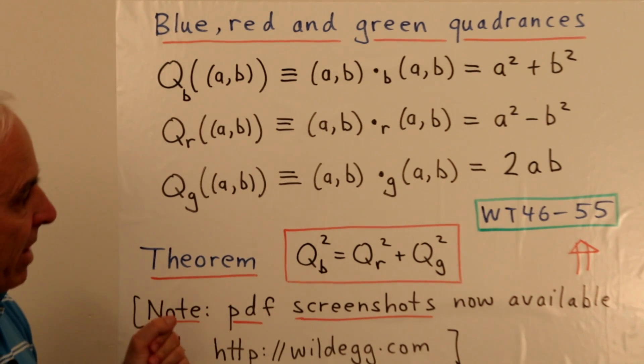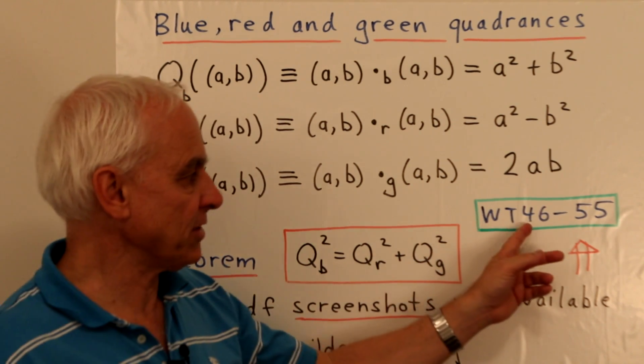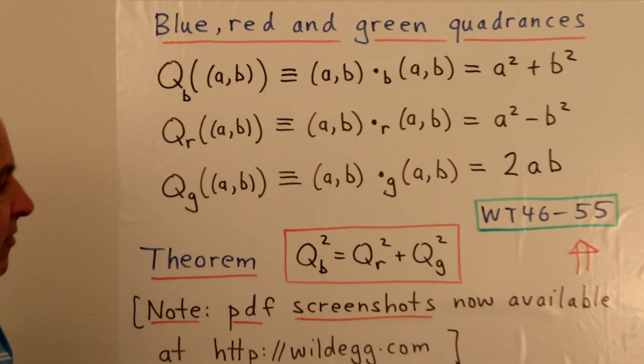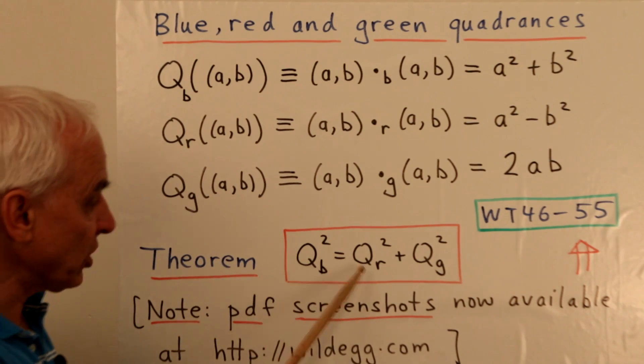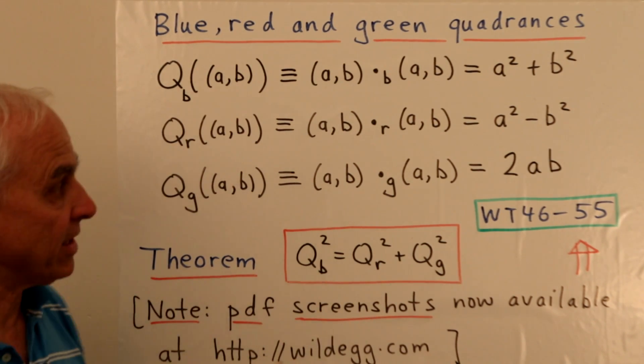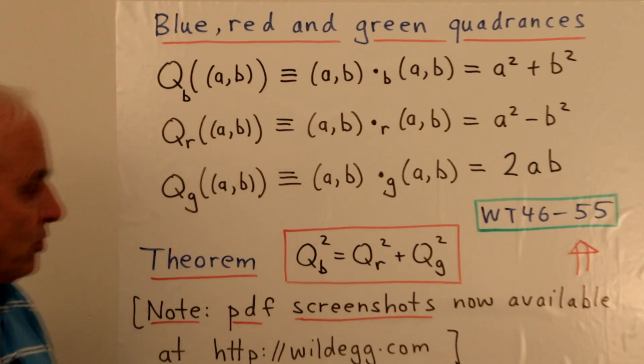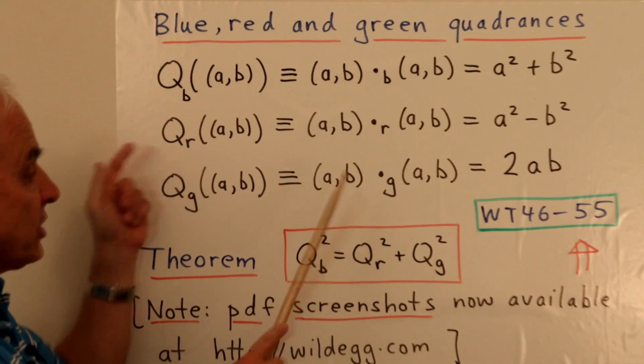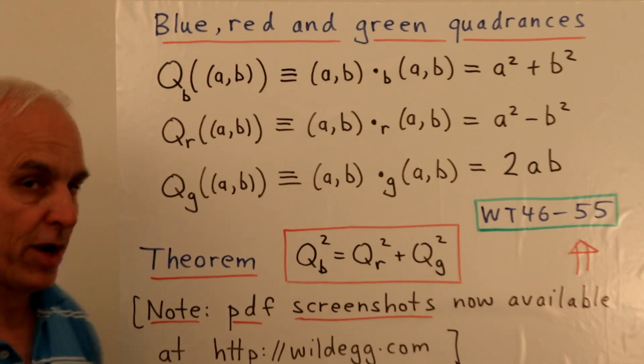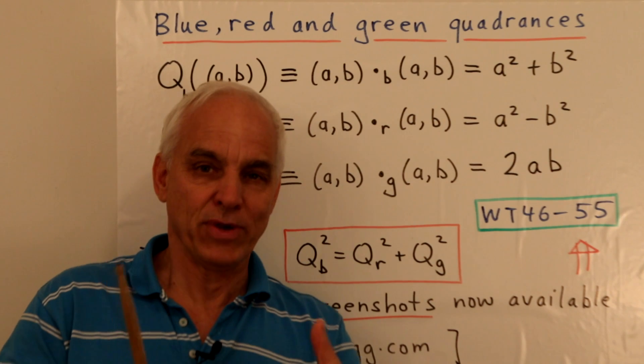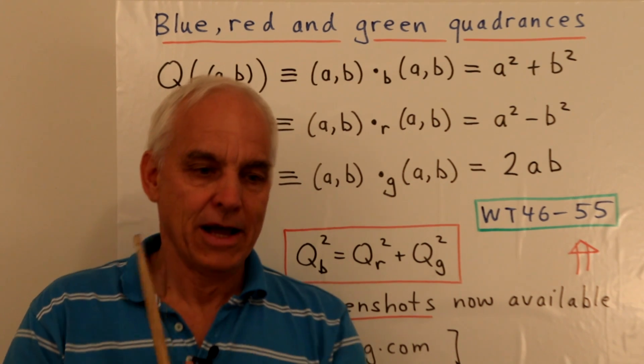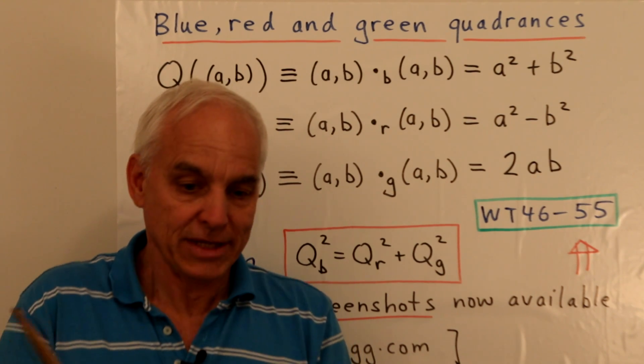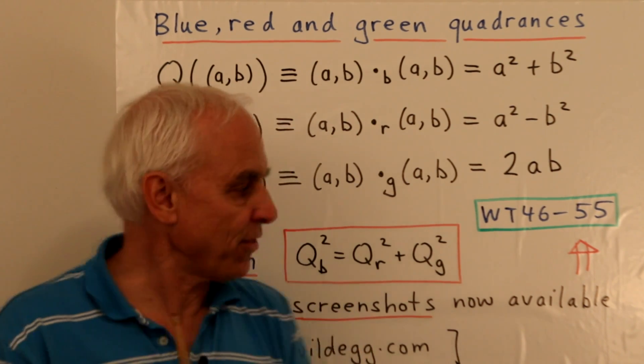We've talked a lot about chromo geometry in the Wild Trig series from 46 to 55, but it's been a while, so I'm reviewing some things. In particular, I've already mentioned this lovely simple relationship between these three quadrants: the blue quadrants squared equals the red quadrants squared plus the green quadrants squared. So we have a Pythagorean relation between these three quadrants, suggesting there really is an intimate connection between the three of them.